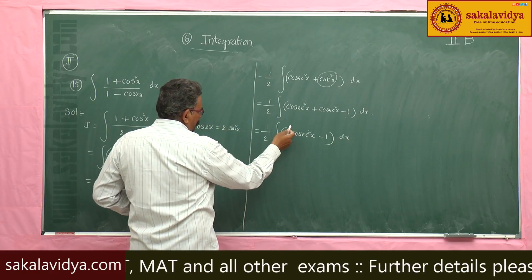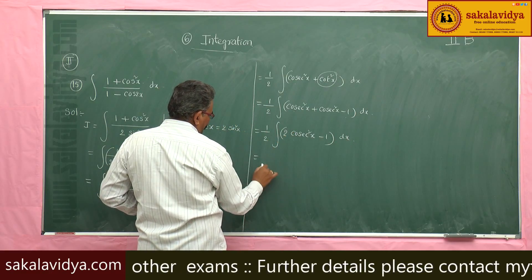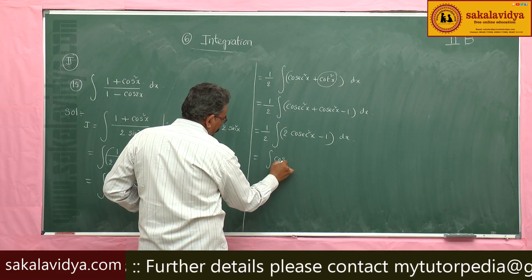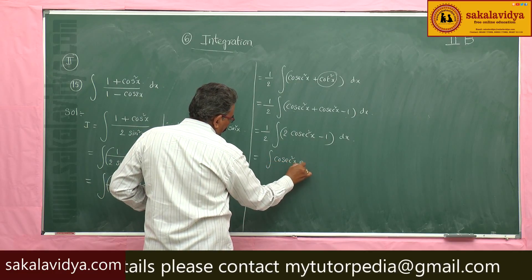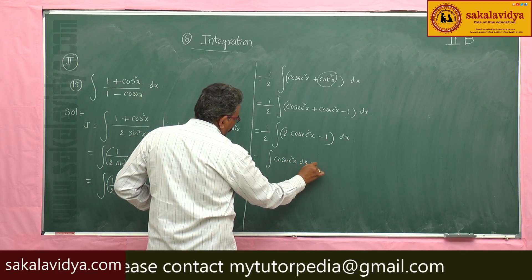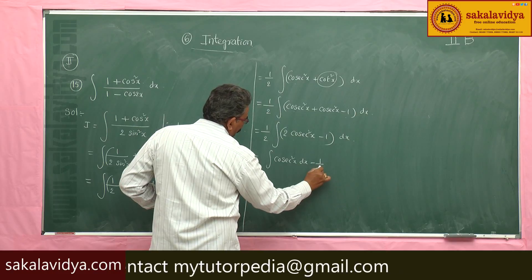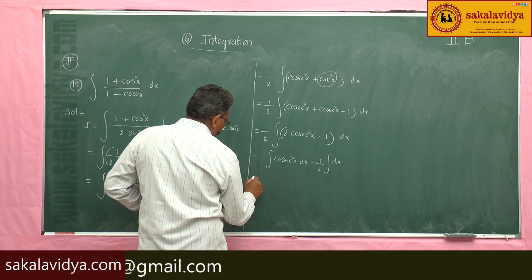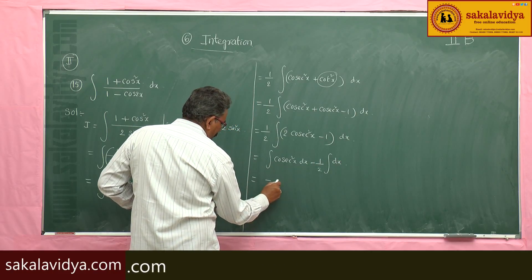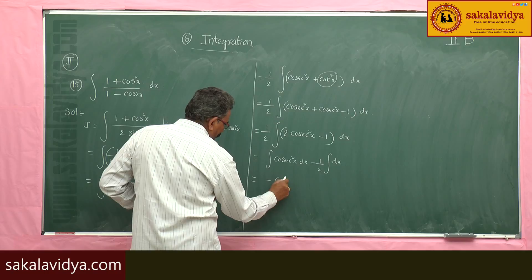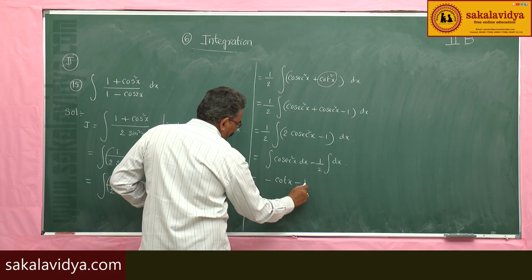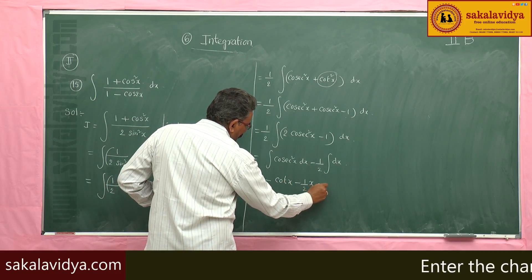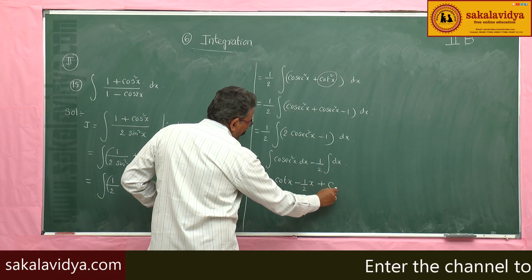The 2 and 1/2 cancel. We get the integral of csc²x dx minus the integral of dx. This gives us -cotx - x plus constant of integration. So the answer is -cotx - x + C.